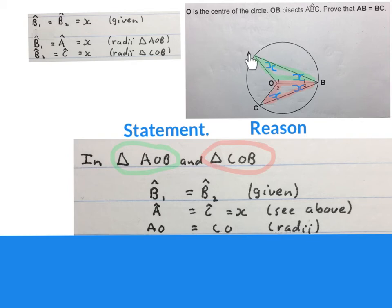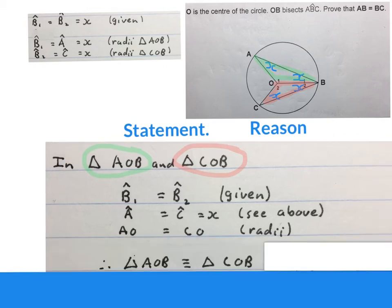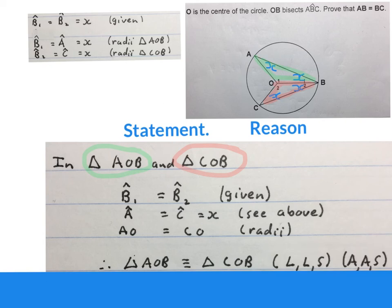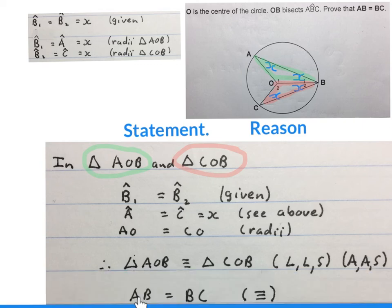They're from the center to A and from the center to C, and radii in one circle are equal. Then we say triangle AOB, the green one, is congruent to triangle COB, the red one — our reason is angle-angle-side, or AAS, all depends on how you want to write it. Then we can just say AB is equal to BC from congruency, and that's what we had to prove.